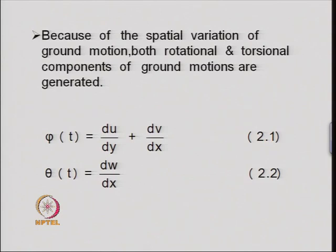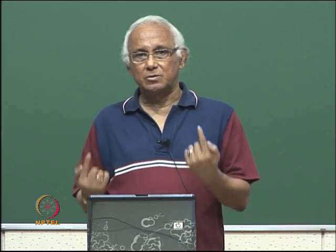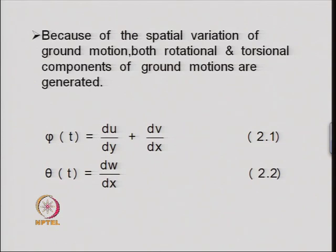Similarly, if we consider two vertical ground motions with a time lag, this induces a rotation, as shown in equation 2.2. Therefore, we have three components of ground motion — two horizontal and one vertical — plus a torsional ground motion about a vertical axis and a rotational ground motion in the direction of wave propagation.